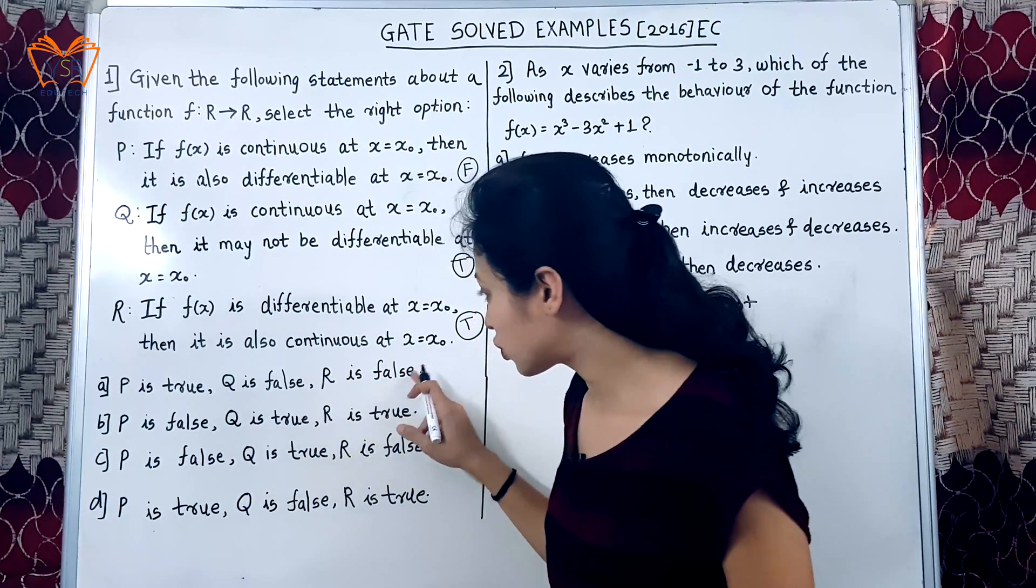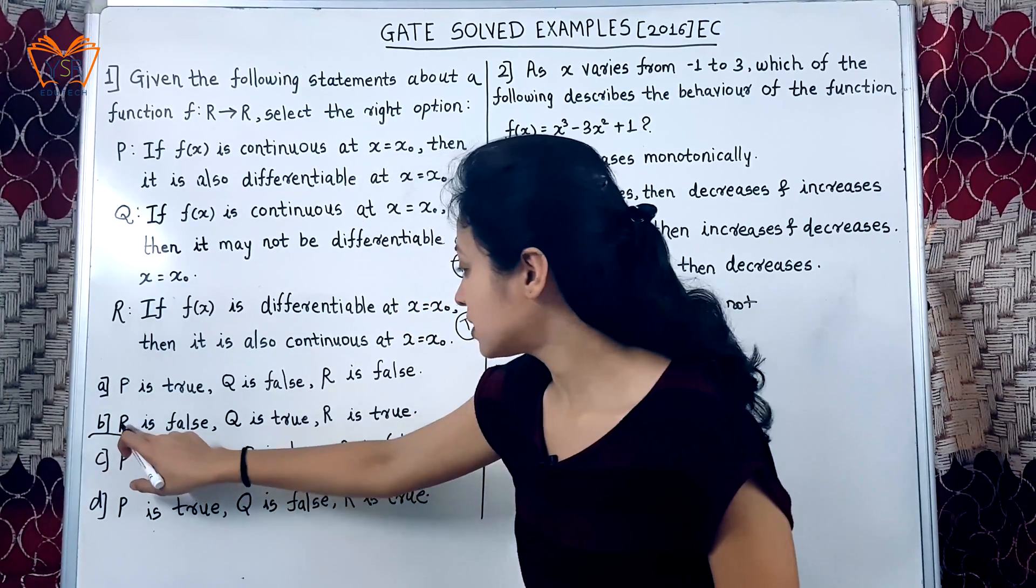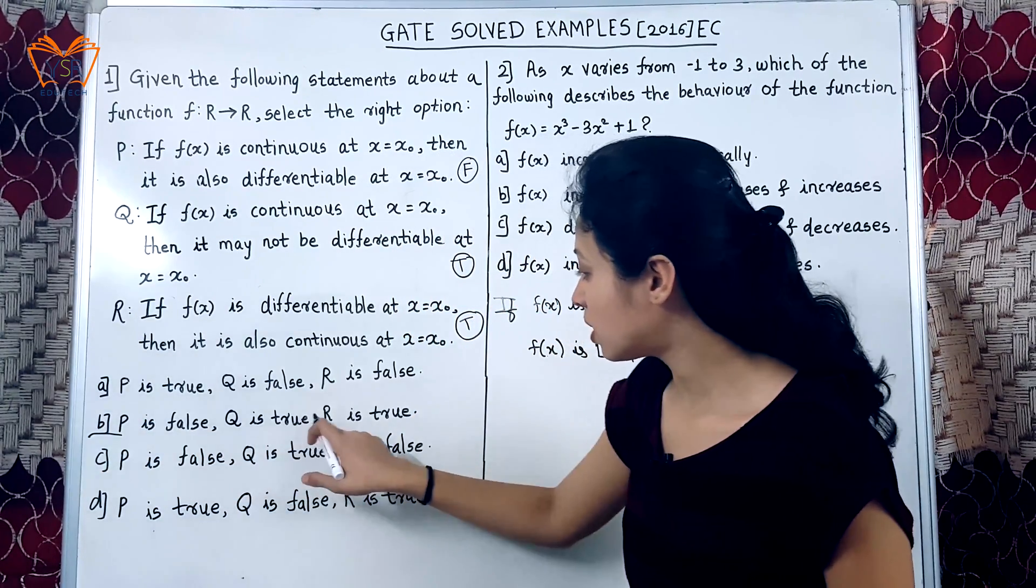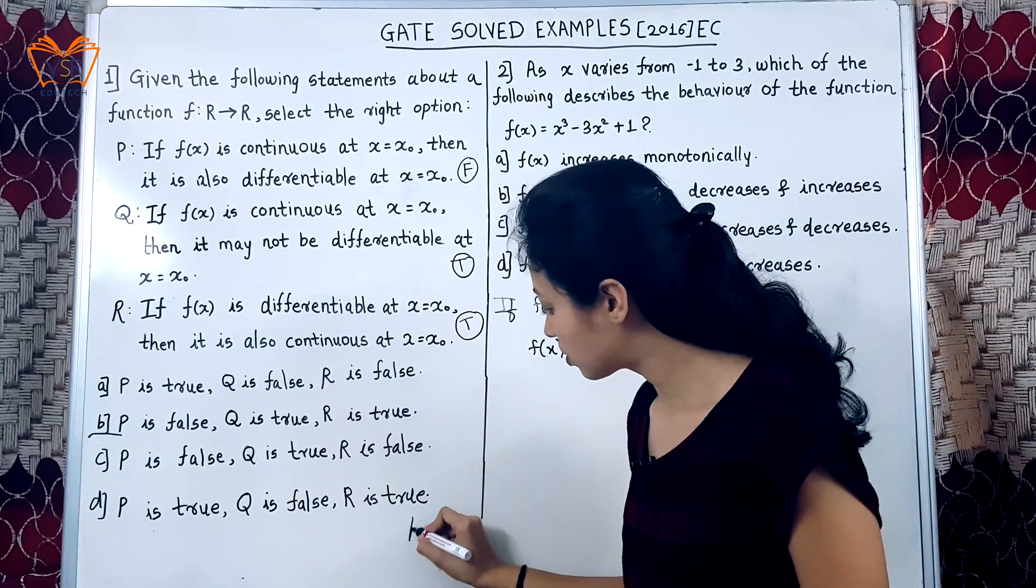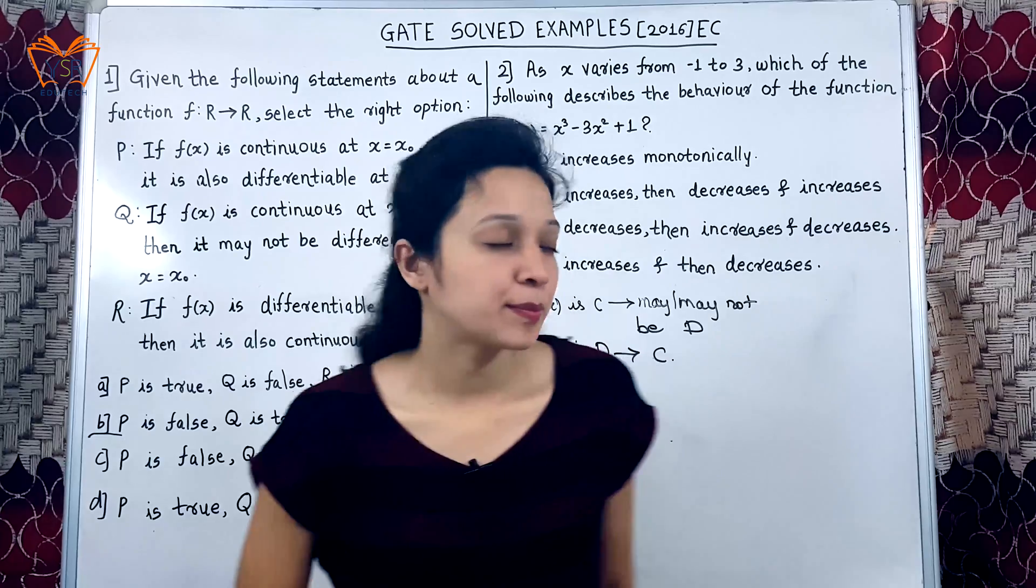Let us compare it with the given option. Option b is correct. That says p is false, q is true, r is true. So, for the first example, we got the option correct as b.